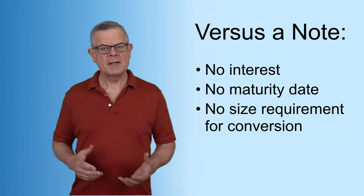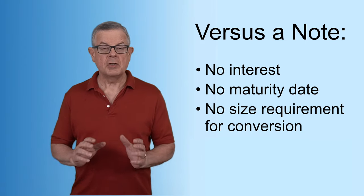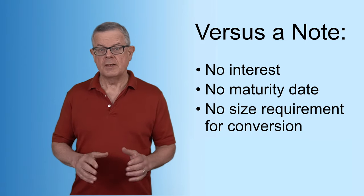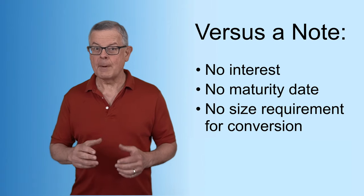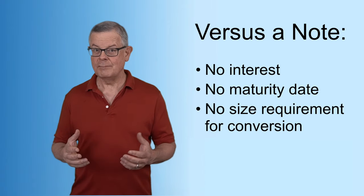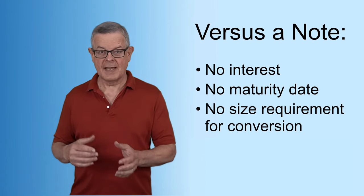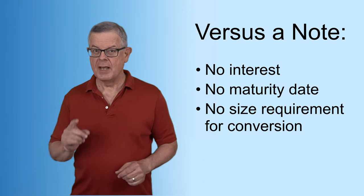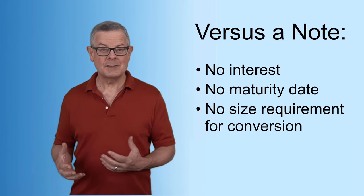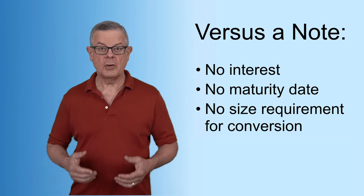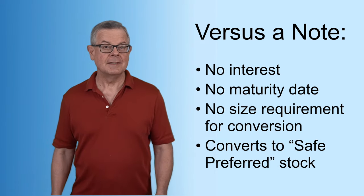When there is an equity investment round in the future — we'll call it a Series A — that causes the SAFE money to convert into ownership. The SAFE investor might receive the same stock, the same preferred shares that the Series A investor does. But very often, the SAFE investor receives a slightly different version of preferred shares called the SAFE preferred — we'll explain that in a minute.